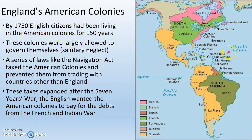By 1750, English citizens had been living in the American colonies for about 150 years, and these colonies had largely been allowed to govern themselves in a process known as salutary neglect. King George III had spent lots of money protecting the English colonies from the French and Native Americans during the French and Indian War, and he wanted his money back. So he enacted a number of laws and taxes on the American colonies, like the Navigation Act and the Stamp Act. The problem is the 13 colonies had no say-so over whether these taxes were imposed — they had no representation in the English parliament, and this made them very upset.